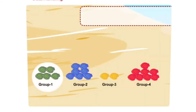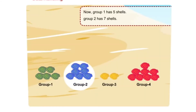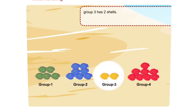Now group 1 has five shells. Group 2 has seven shells. Group 3 has two shells. And group 4 has eight shells.